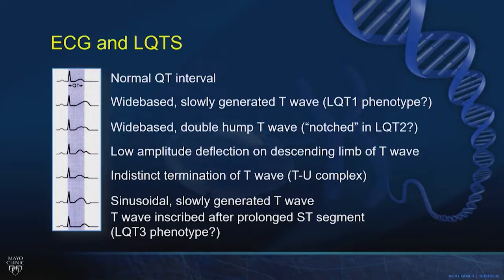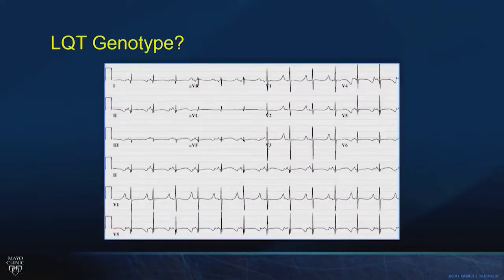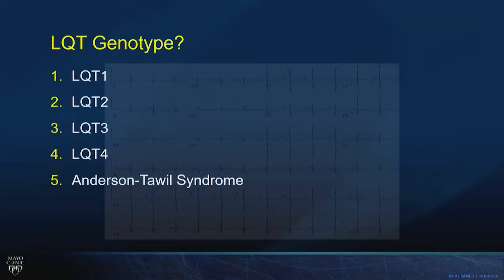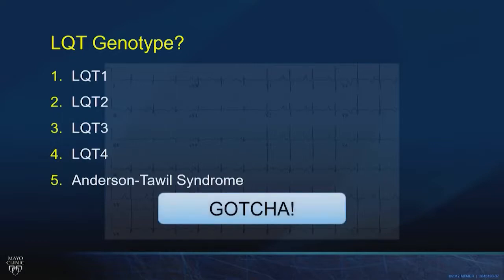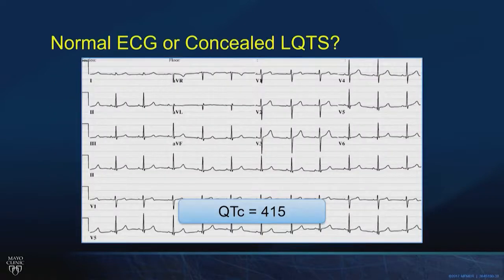A QTc of 415 — are you bothered by the length or the look of repolarization? That ECG is perfectly normal in a patient who absolutely has long QT syndrome genetically. This is why you must do genetic testing in all family members regardless of their ECG. There is no ECG normal enough that you can tell them they don't have the family mutation. The patient with the LQT3 pattern doesn't always read the paper — so it's a great gotcha for the boards but doesn't always hold up in reality.